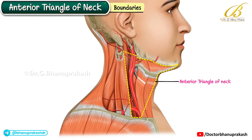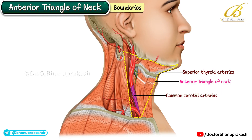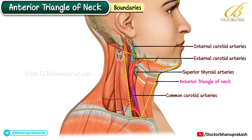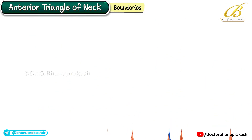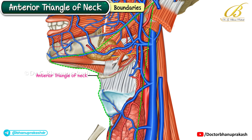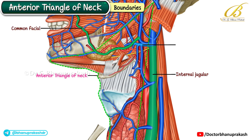The arterial supply includes the superior thyroid, the common carotid, external and internal carotid arteries, and the carotid sinus, facial, and submental arteries. The venous drainage is provided by the internal jugular, common facial, lingual, superior thyroid, and middle thyroid veins.